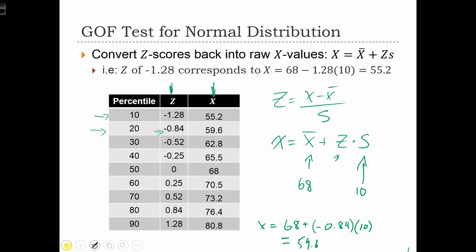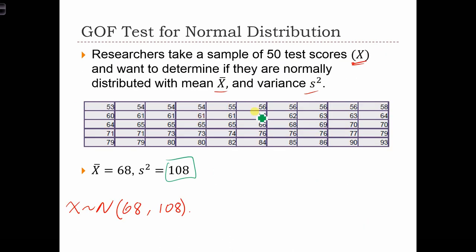And if we go back to our table, we see that there are 1, 2, 3, 4, 5 observations in that first range.